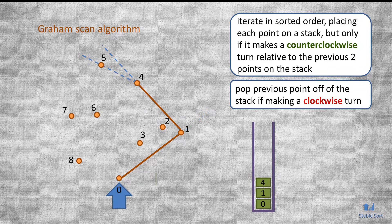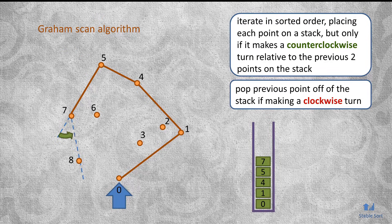Point 5 creates a counterclockwise turn. So it's placed on the stack. Point 6 is then placed on the stack, since it could potentially be part of the convex hull. We don't know yet. But point 7 creates a clockwise turn. So we pop point 6 off of the stack. And so on until we finally get back to the starting point.